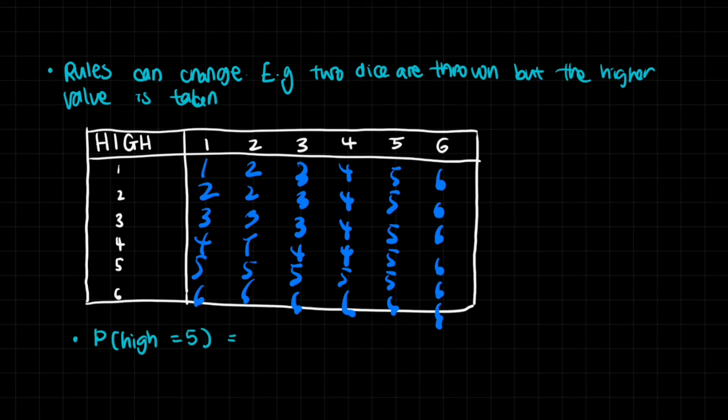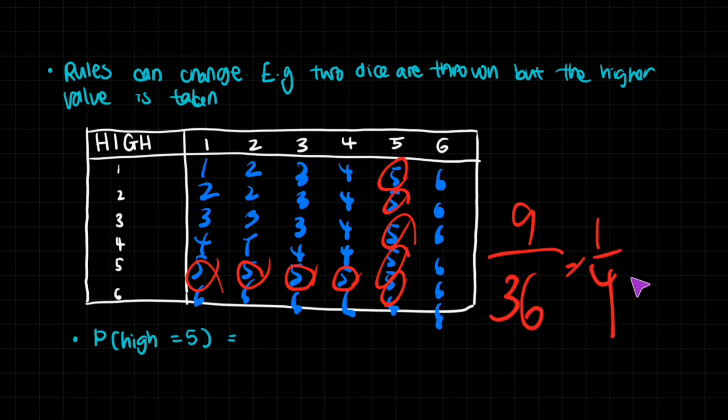Now we want to get the probability that the higher number is five. Now we're just going to circle every single five here. One, two, three, four, five, six, seven, eight, nine. So that is nine out of 36 cells, which gives us 25% of happening.